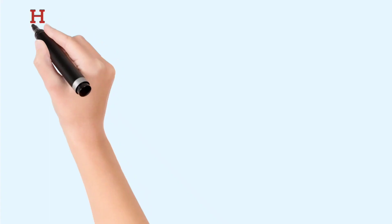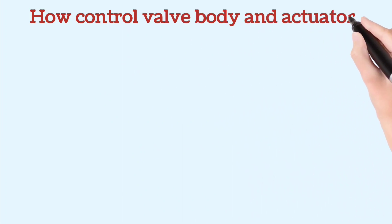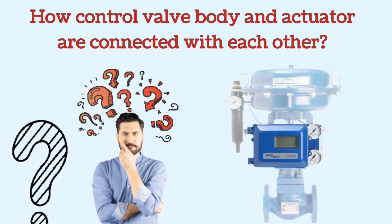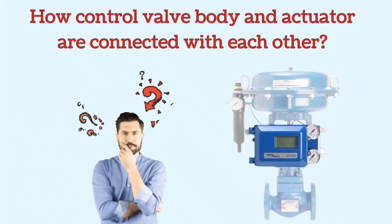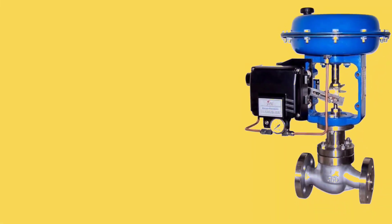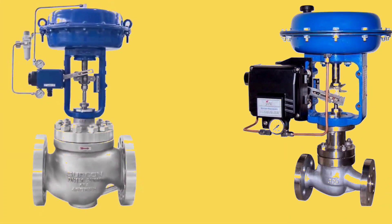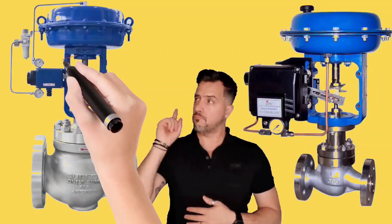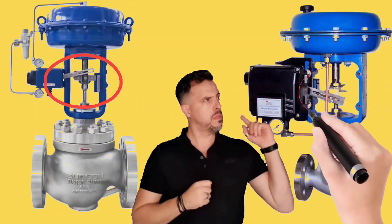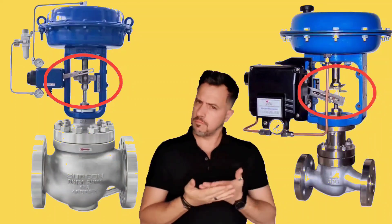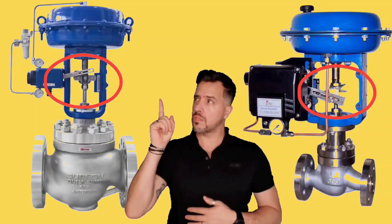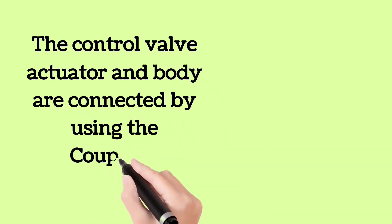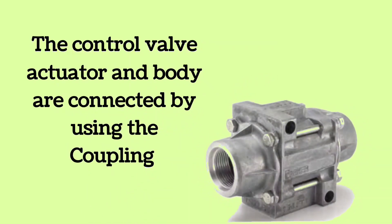The second question is: how are the control valve body and actuator connected to each other? The circles shown in the images indicate the parts that connect the actuator and the body. The part which connects the actuator and the body of the control valve is called a coupling — coupling means to couple.